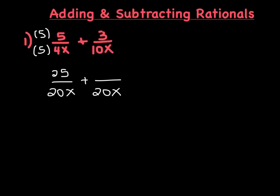So let's look at our second fraction. What do we multiply 10x by to give us 20x? Well, just 2. So if I multiply the denominator by 2, I have to multiply the numerator by 2 to keep it equivalent. So 3 times 2 is 6, so that leaves us with 6 over 20x.